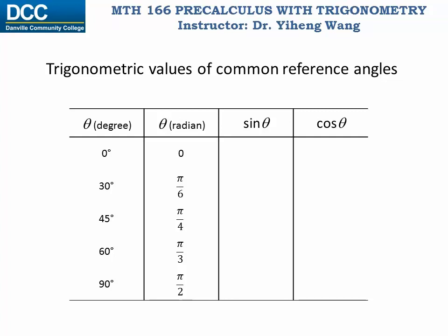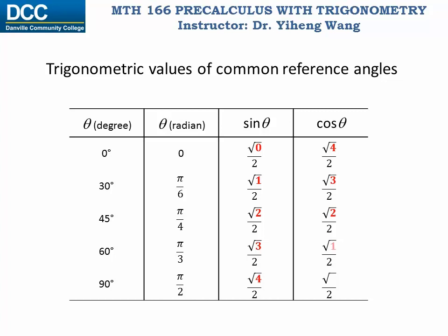Now we want to memorize the sine and cosine values for these special angles. In each space we put square root of n over 2. For sine theta, we fill in the numbers 0, 1, 2, 3, and 4 from smallest to largest under the square root. For cosine theta, we put these numbers in reversed order: 4, 3, 2, 1, 0. Square root of 4 over 2 is 1; square root of 1 over 2 is one half; and square root of 0 over 2 is 0.